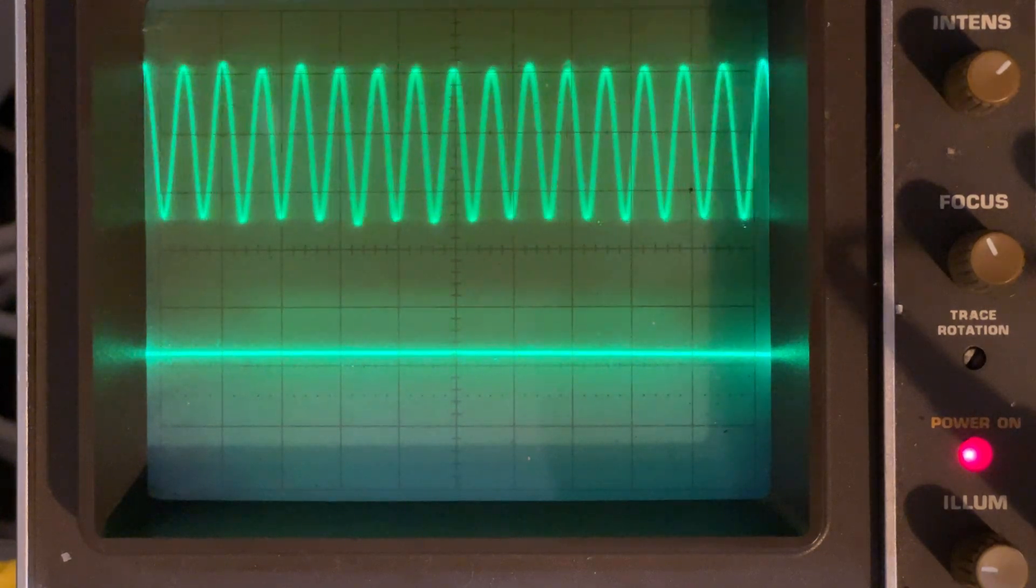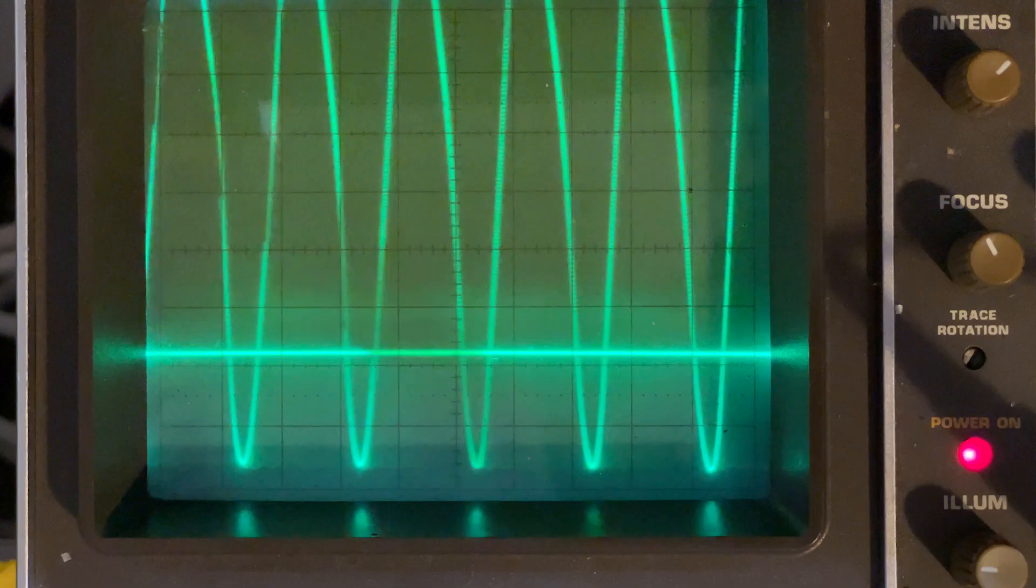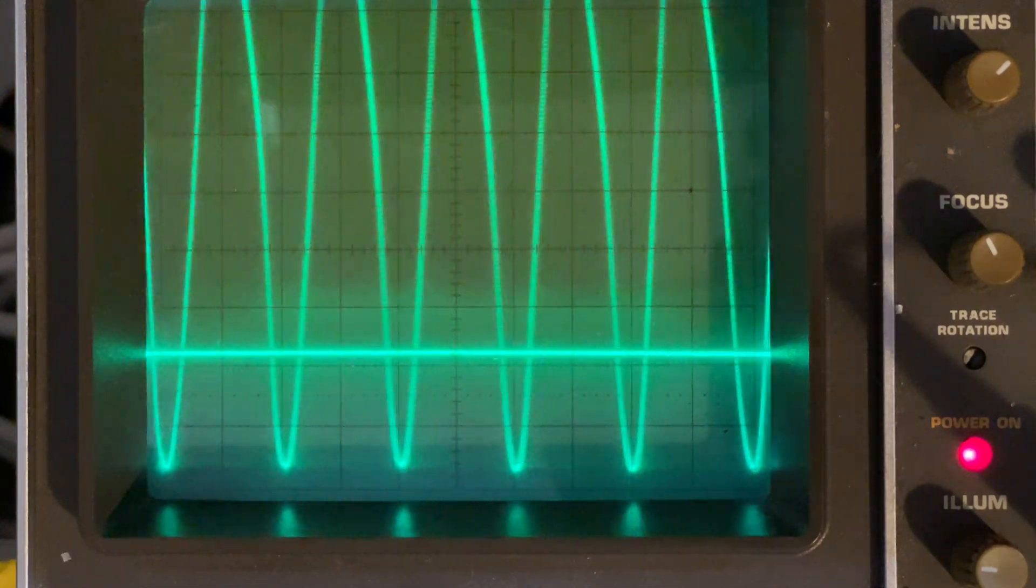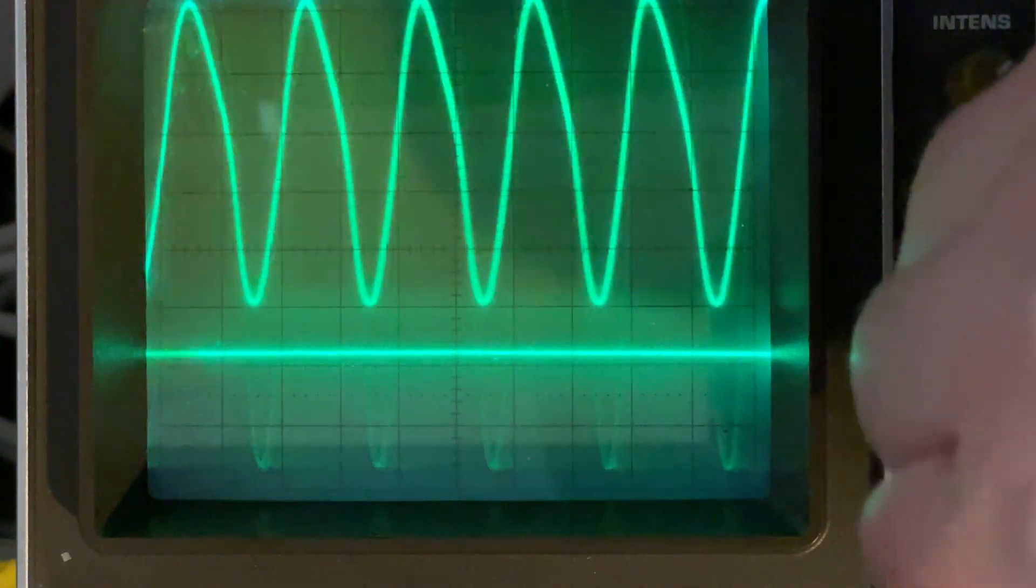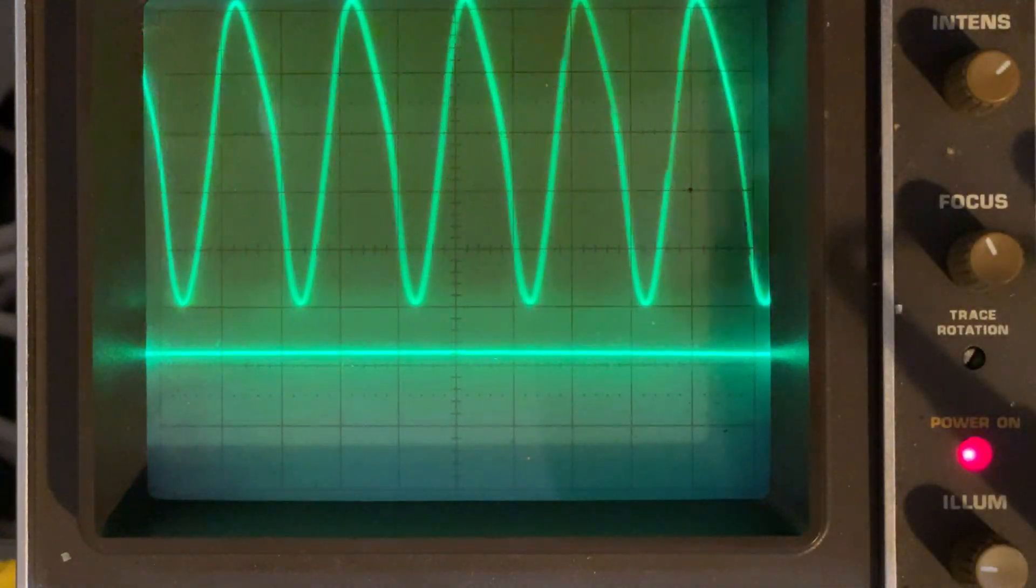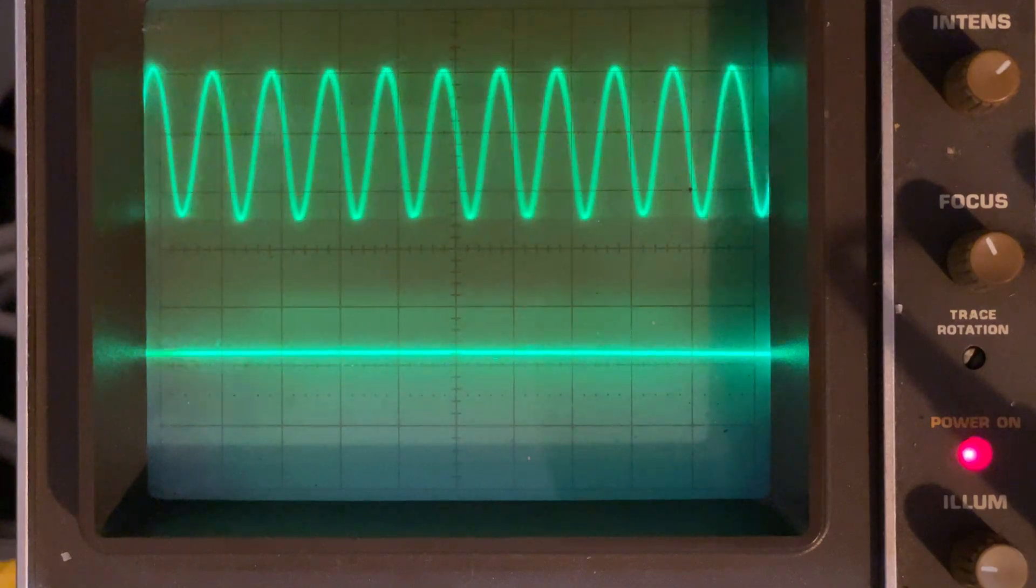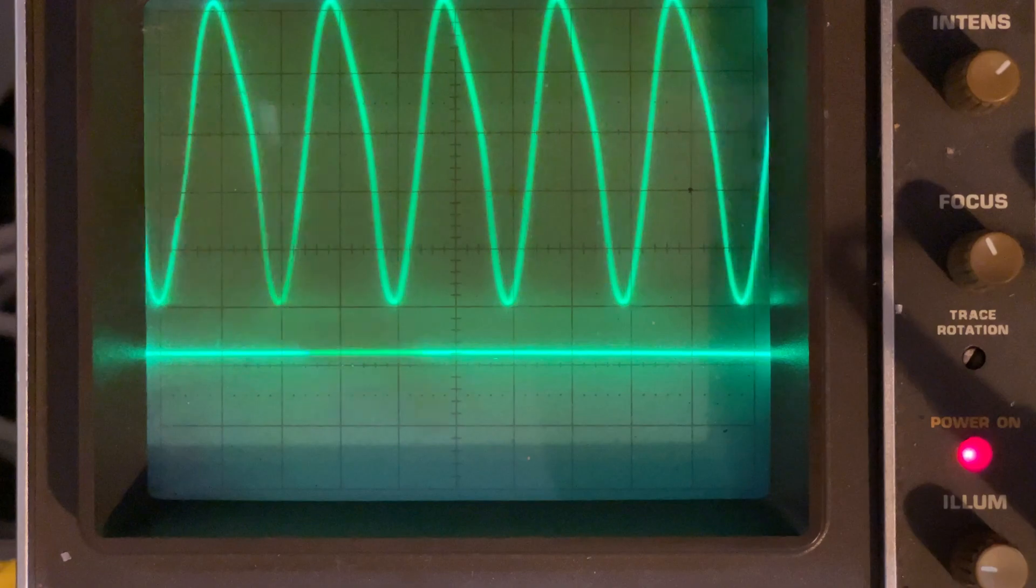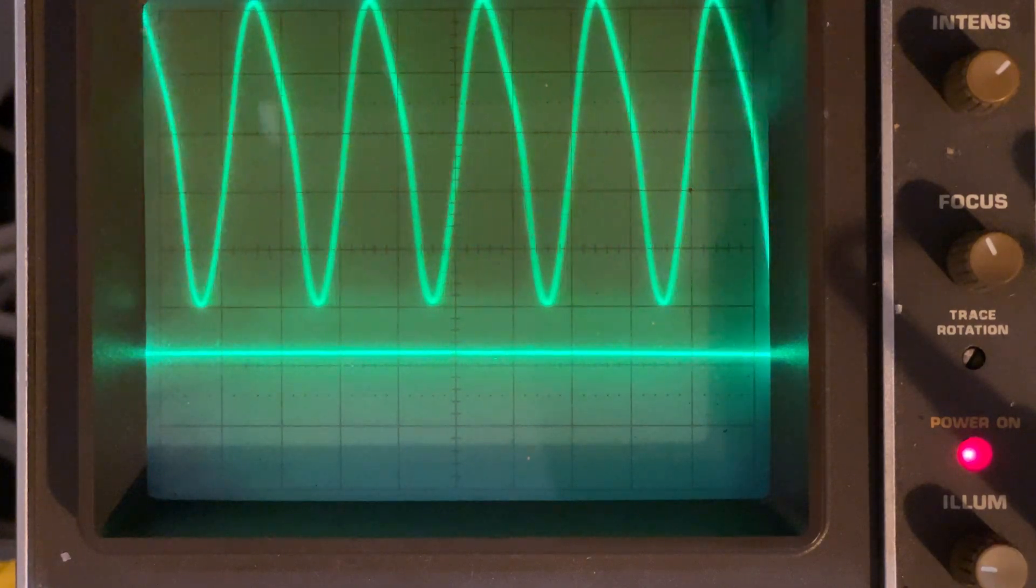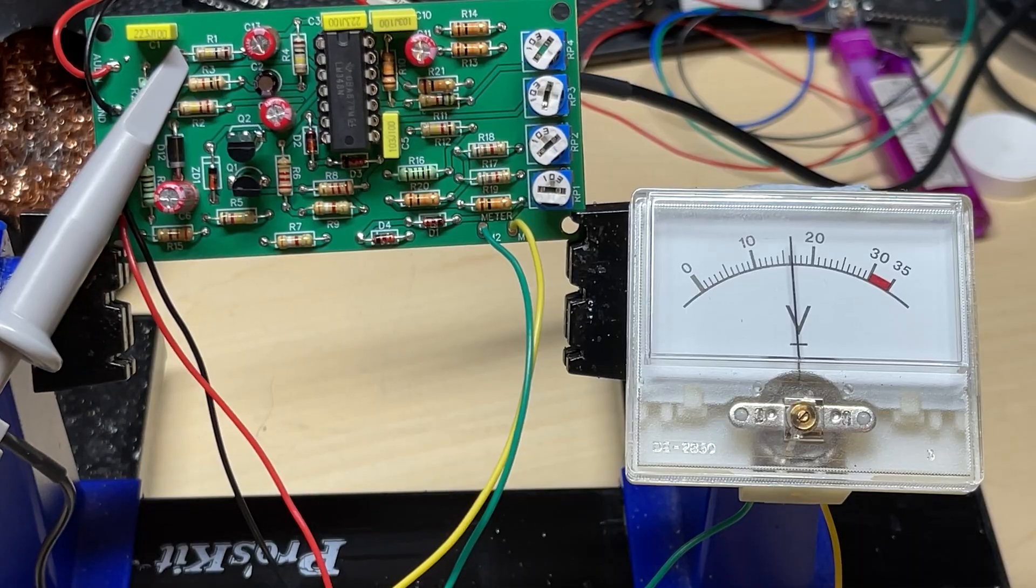So this is using my signal generator which has got a 1K, 2K and 3K tone on it, and it's coming out the back of a radio. Which I thought would be the best way to do it for now, seeing I don't have an accurate signal generator, but I've got one coming. So that's the 1K, 2K and 3K signals.